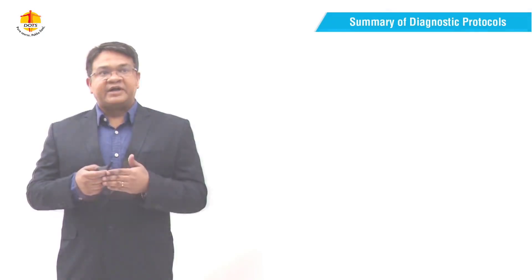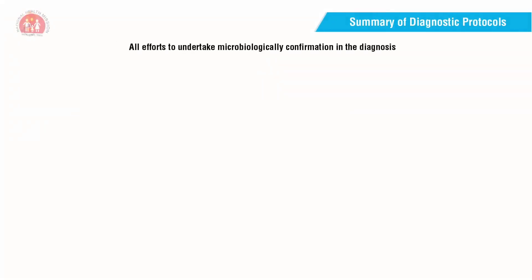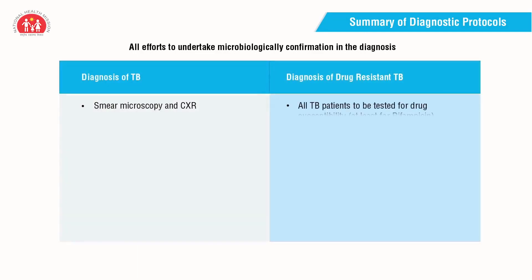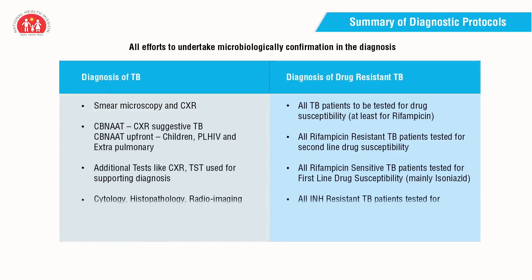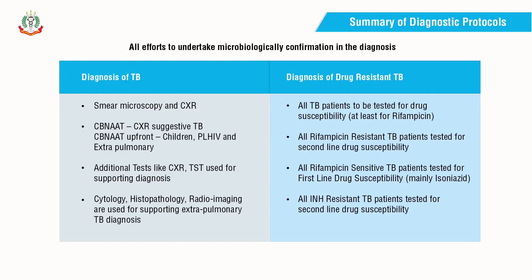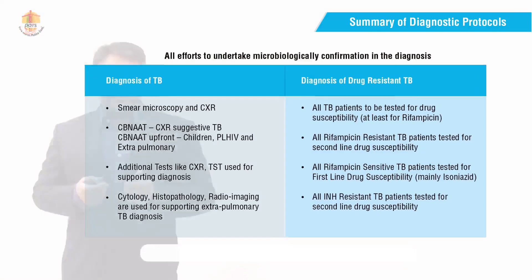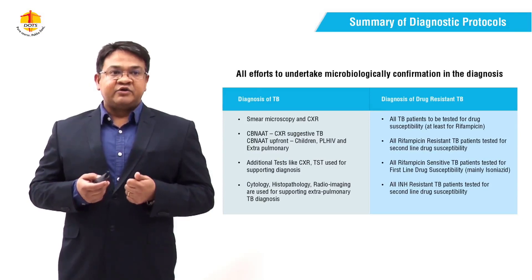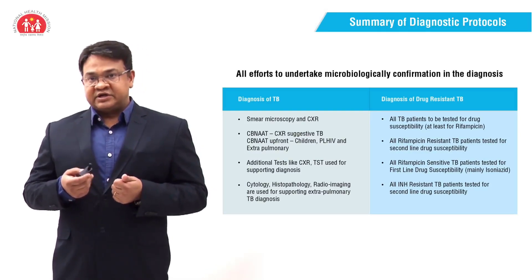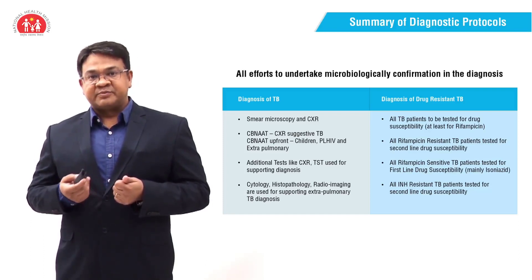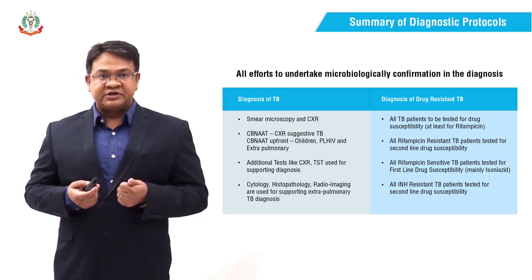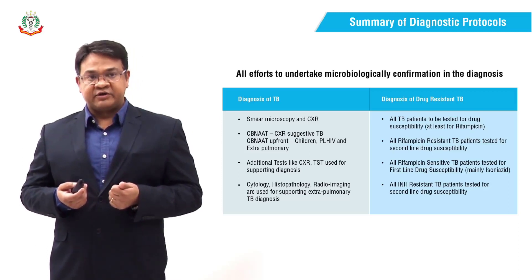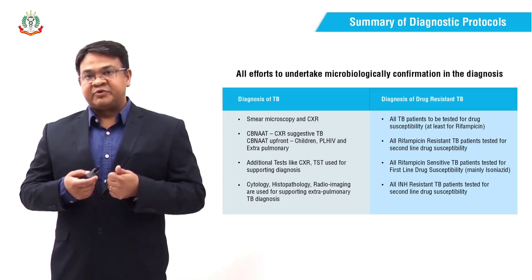To summarize, all efforts need to be taken to confirm diagnosis microbiologically. Smear microscopy and chest X-ray can be done simultaneously to minimize delay in diagnosis. Chest X-ray is a screening test, and abnormality in chest X-ray in smear-negative cases needs to be subjected to CBNAAT testing. CBNAAT upfront should be offered for specimens from children, people living with HIV, and extra-pulmonary TB diagnosis. Other tests like chest X-ray and tuberculin skin test can be used to support diagnosis in children, and cytology, histopathology, and radio-imaging are used to support extra-pulmonary diagnosis. These are the tools which will help you arrive at a proper diagnosis of TB.